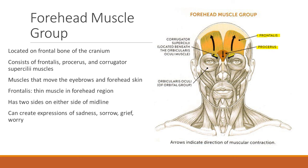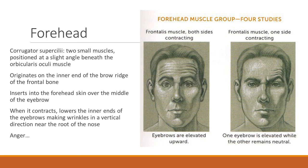These muscles move the eyebrows and forehead skin, and they have two sides on either side of the midline. This creates expressions of sadness, sorrow, grief, and worry. In the forehead, different expressions are created — here we see eyebrows elevated upward, which can be surprise or expressions of awe where both eyes are open wide.